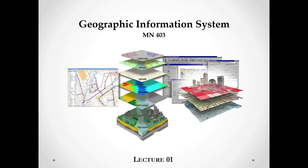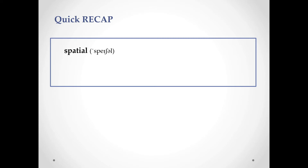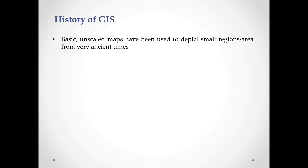This is the lecture on the topic Geographic Information System, GIS. The word 'spatial' means correlating to space — existing or happening in space. Let's see the history of GIS.